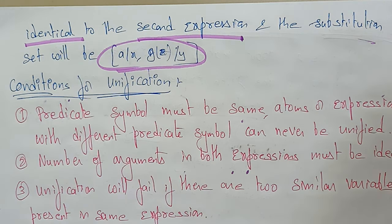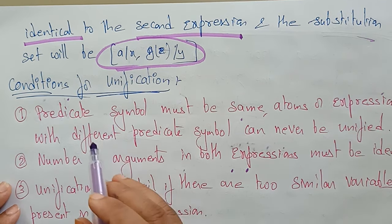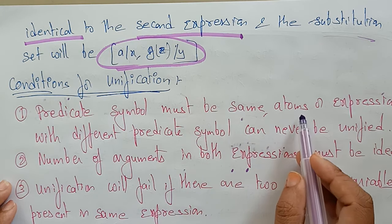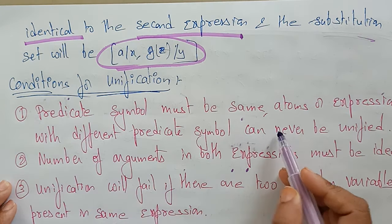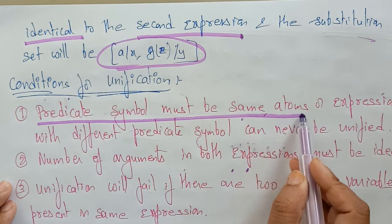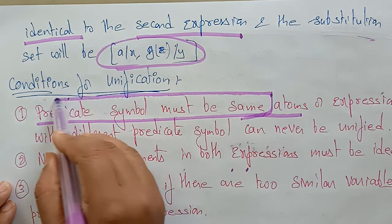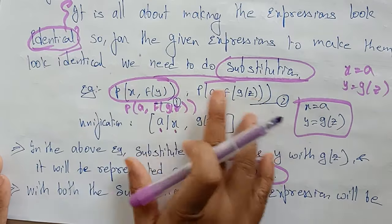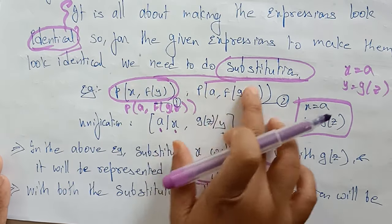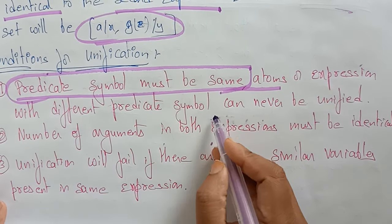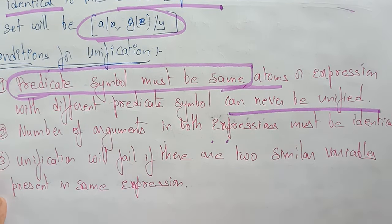Now let's see some of the conditions for unification. The first condition is: the predicate symbol must be the same. Atoms or expressions with different predicate symbols can never be unified. So the predicate symbol must be the same, and the arguments should also be the same.